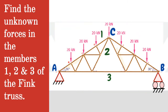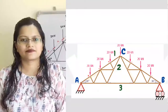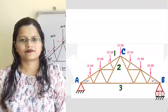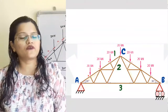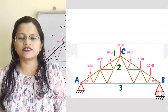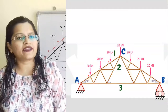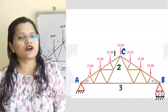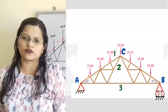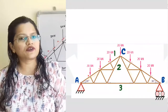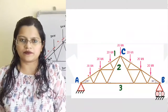Given question: find the unknown forces in the members 1, 2, and 3 of the Fink truss. This question asks us to find unknown forces in a few members rather than all members of the truss. So we are going to use the section method.